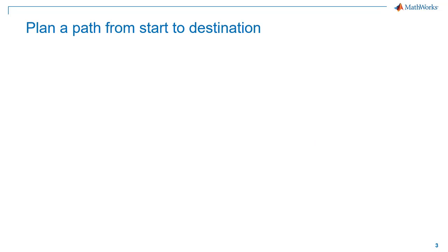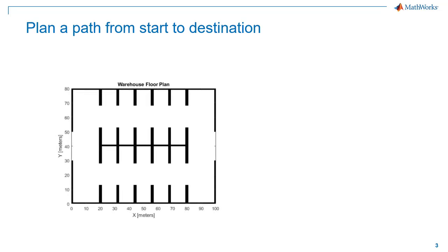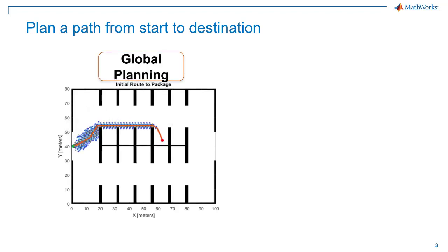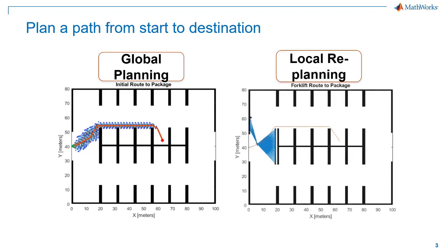In a typical autonomous robot workflow, the perception module provides information on how the environment around the robot looks like, including the obstacles that the robot should avoid bumping into. We get the location of the robot at each movement or state from the localization algorithms. Motion planning comes into picture when the robot needs to autonomously navigate from the initial location to the goal location. Motion planning algorithms help to plan the shortest obstacle-free path to the goal. With MATLAB and Simulink, you can use algorithms such as RRT or Hybrid A* for global path planning, and trajectory generation for local replanning in case there is an unknown obstacle on the way.